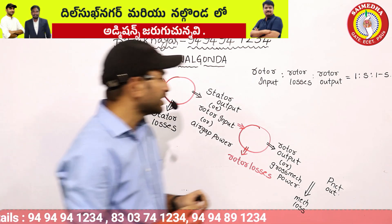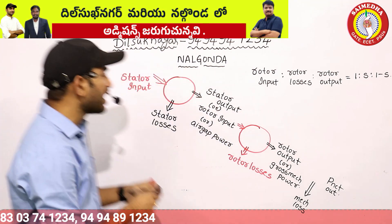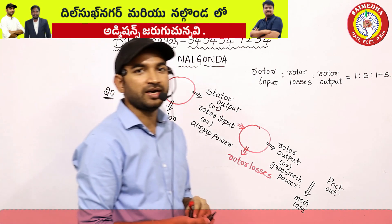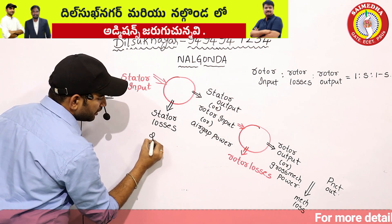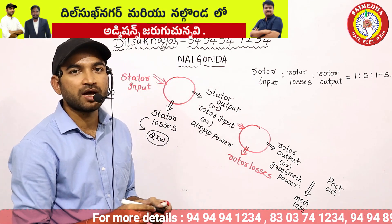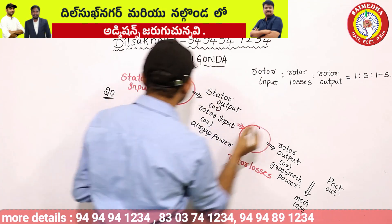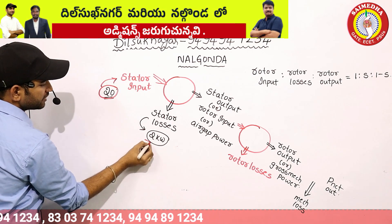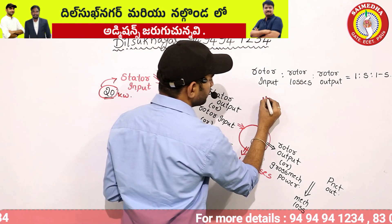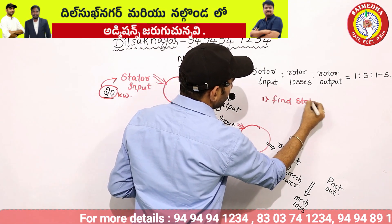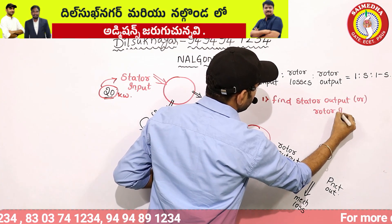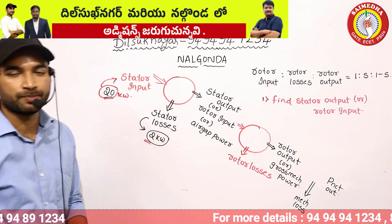Let's try a small problem. Stator input is given as 20 kilowatts. Stator losses are 2 kilowatts. The first question: find the stator output, which is also the rotor input. Stator output = Stator input − Stator losses = 20 kW − 2 kW = 18 kW.